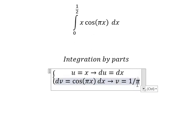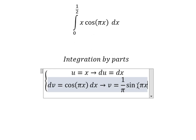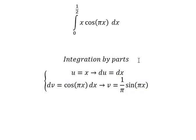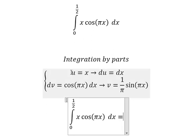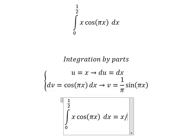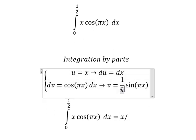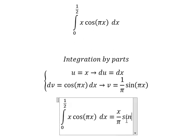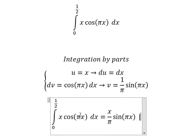And now we have u multiplied by v, and then we put the bounds from 0 to 1/2.